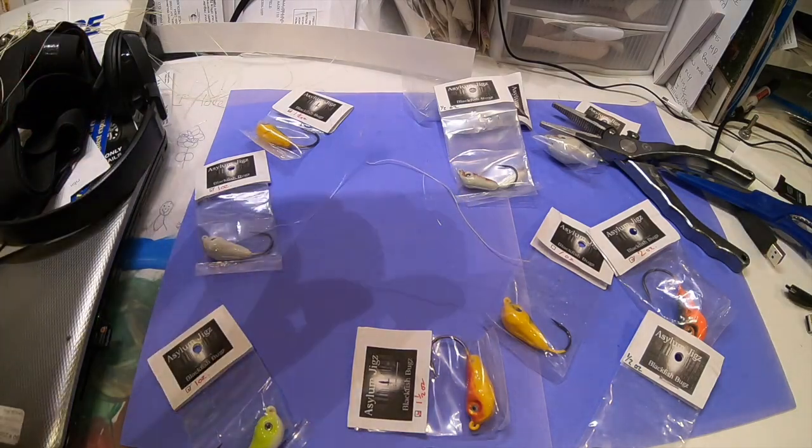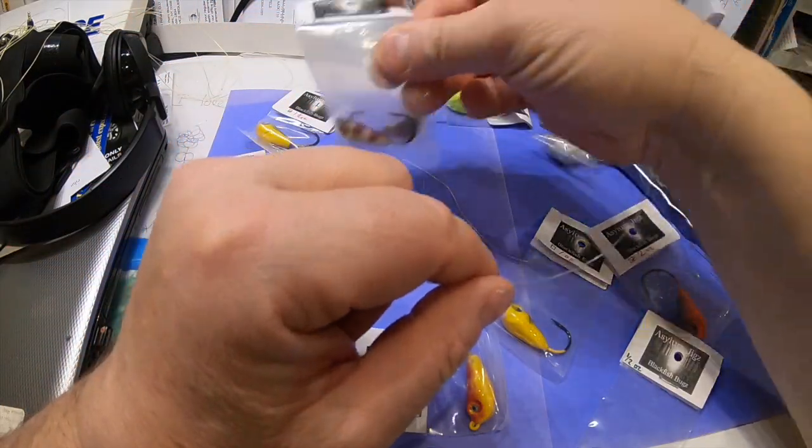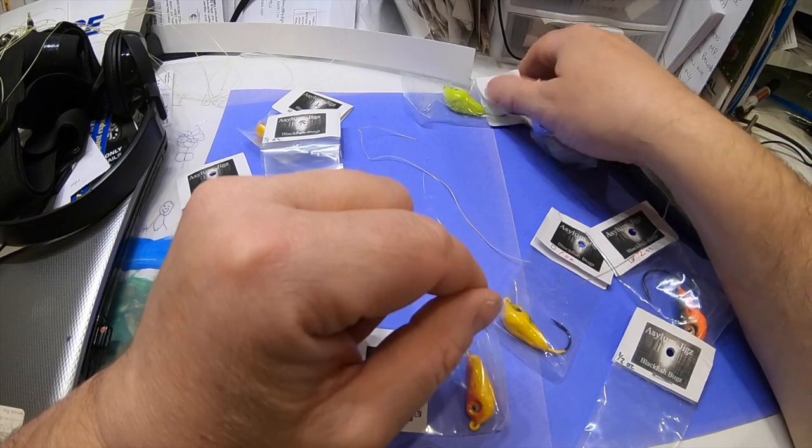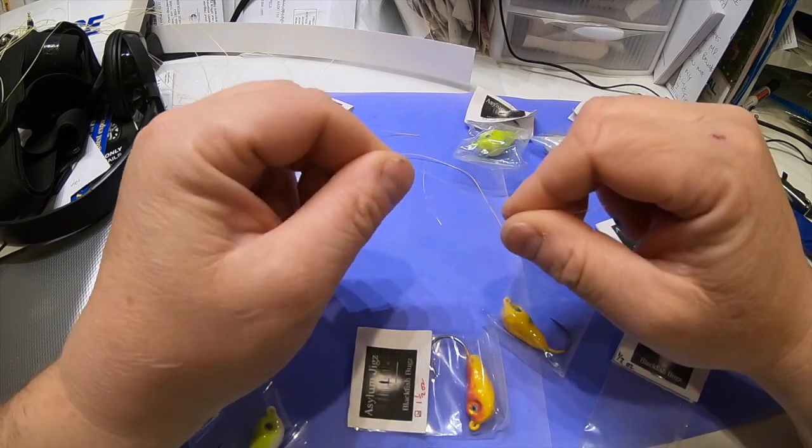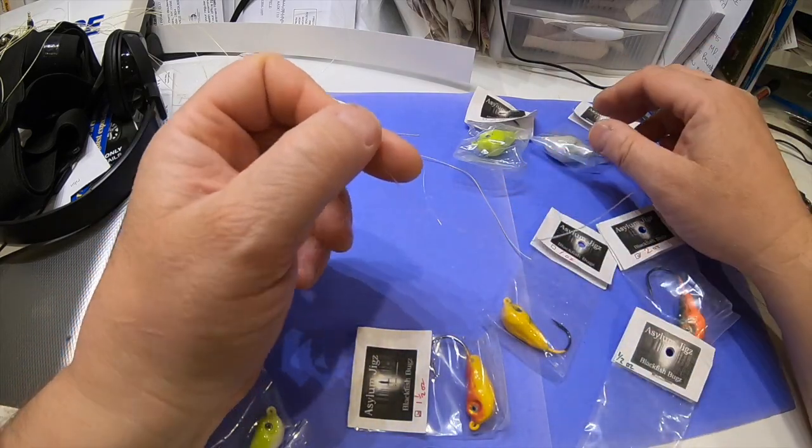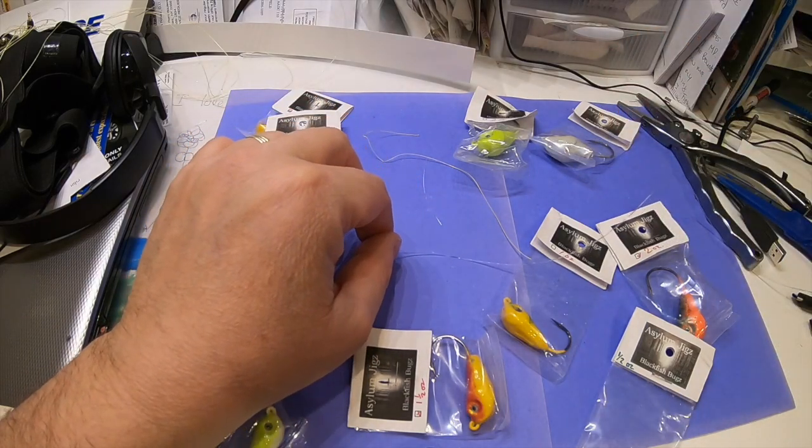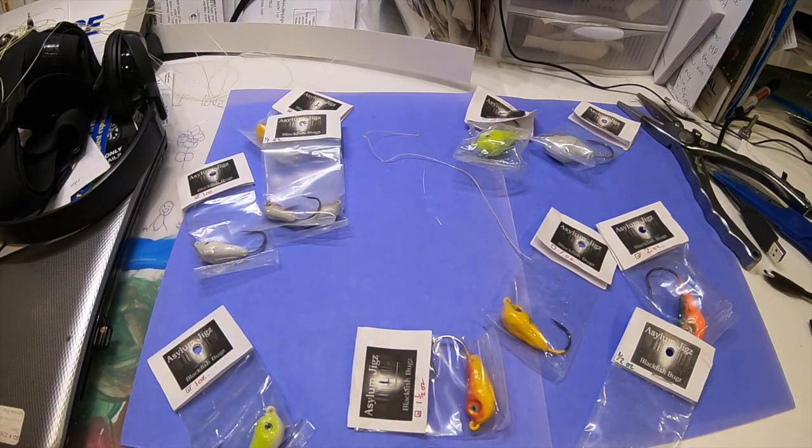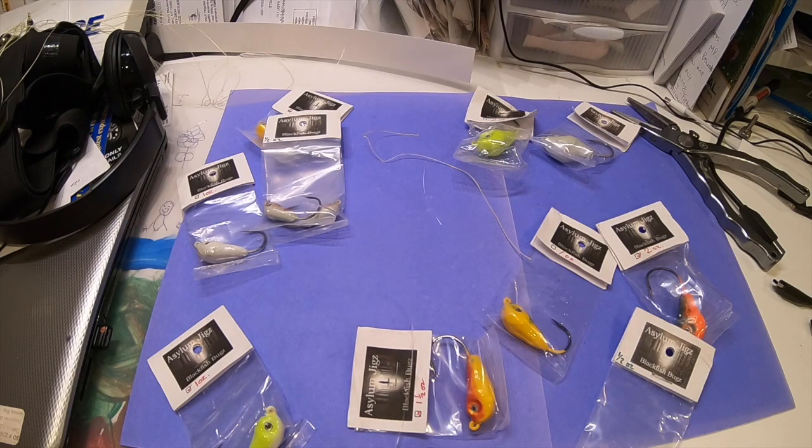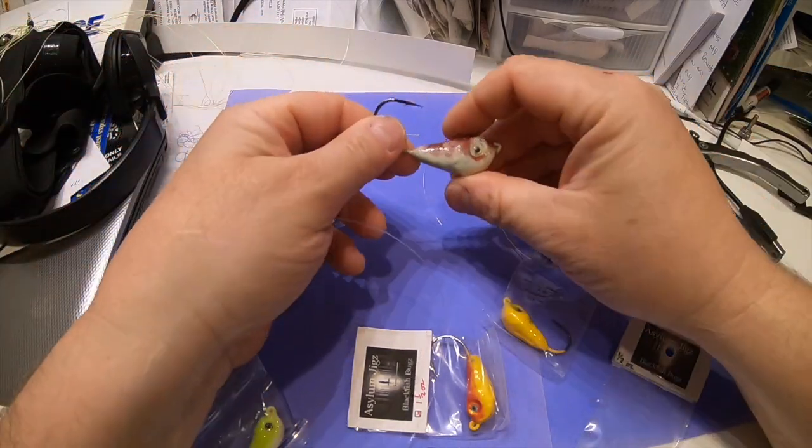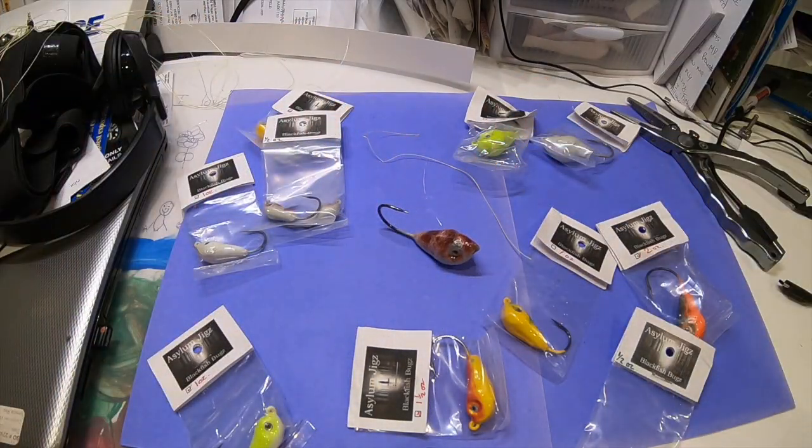Next we're going to choose which pretty Asylum jig we're going to use. I don't know where I'll be fishing next but I have a suspicion. I've already got an unpackaged 2.5 ounce in glow and I'm going to be fishing really deep.